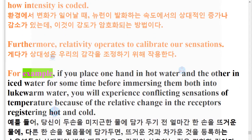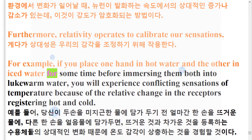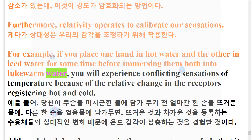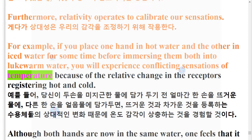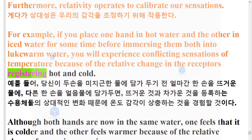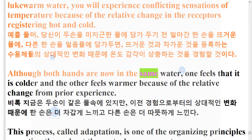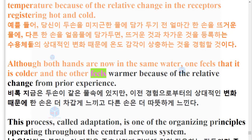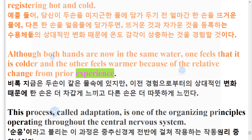For example, if you place one hand in hot water and the other in iced water for some time before immersing them both into lukewarm water, you will experience conflicting sensations of temperature because of the relative change in the receptors registering hot and cold. Although both hands are now in the same water, one feels that it is colder and the other feels warmer because of the relative change from prior experience.